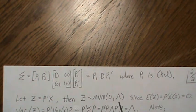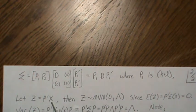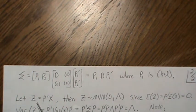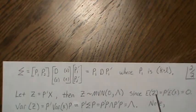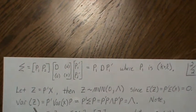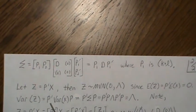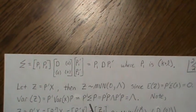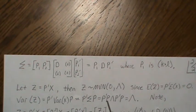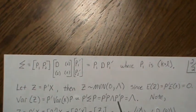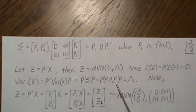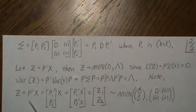Then z is multivariate normal(0, Lambda). This is true because x is multivariate normal and we're taking a linear combination, so z is multivariate normal. The mean of z is zero, and the variance of z is P' * sigma * P, which using the spectral decomposition of sigma and the fact that P is orthogonal gives back Lambda.